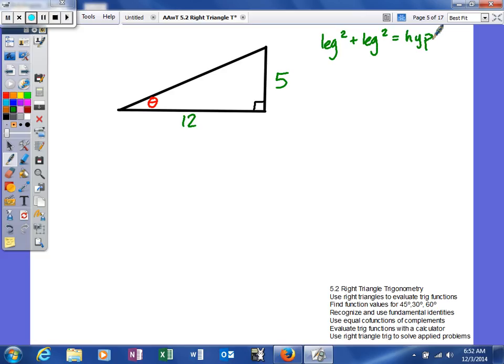We'll plug these values in. We know both of our legs, so 5 squared plus 12 squared equals the hypotenuse squared. This gives us 25 plus 144 equals the hypotenuse squared, so 169 equals the hypotenuse squared.